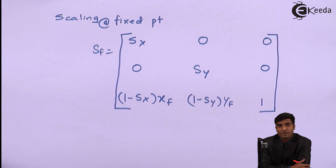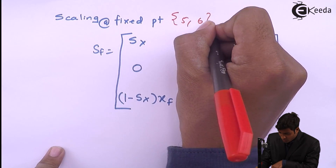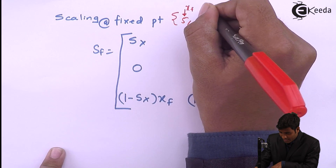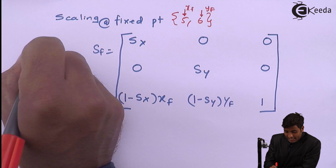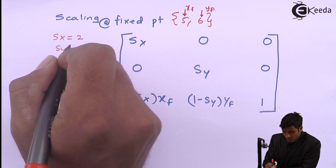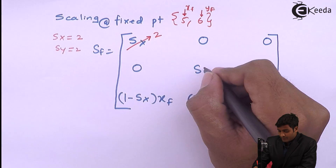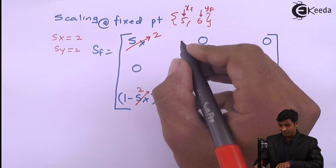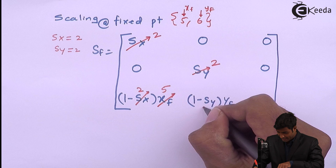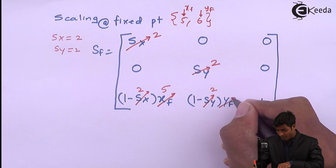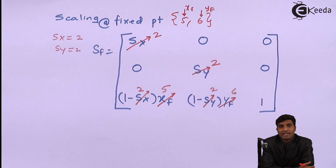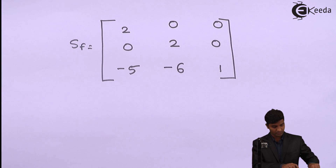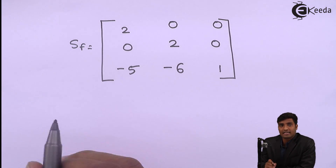Using the matrix for scaling about a fixed point, where the fixed point is (5, 6), xf=5 and yf=6, and sx=2, sy=2. After replacing the values of sx, sy, xf, and yf into the scaling-about-fixed-point matrix, I obtain the resulting scaling matrix.